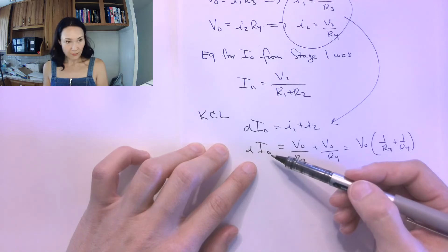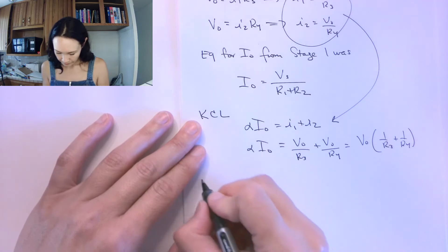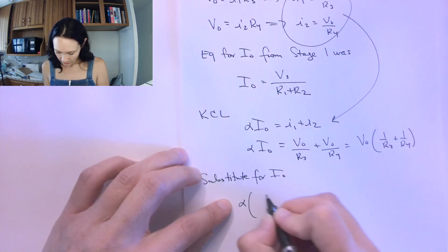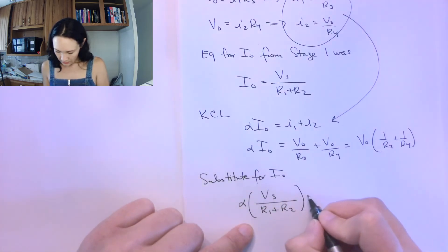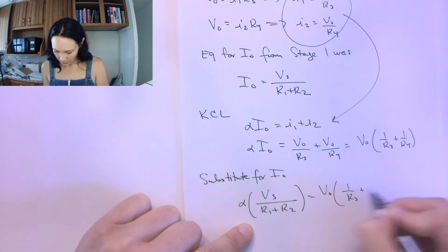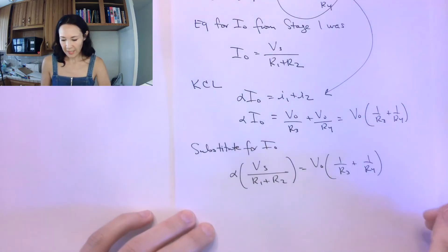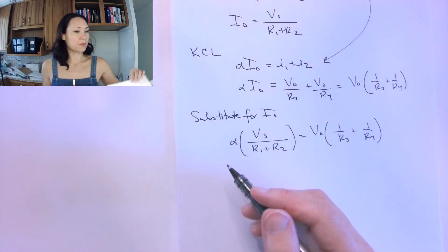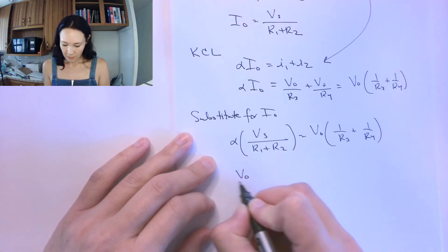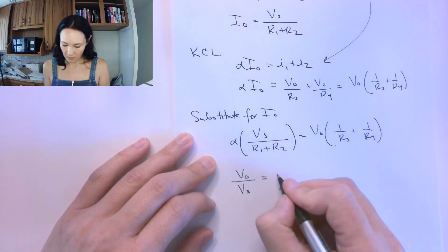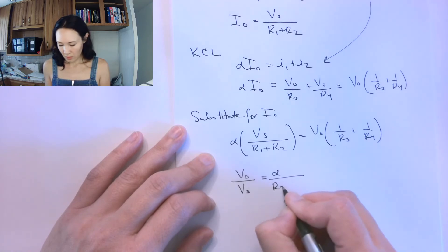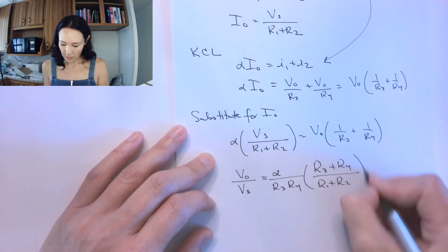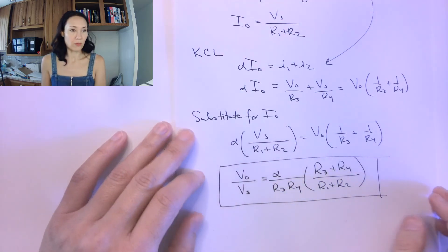That's equal to alpha times I0. Now, in place of I0, I can put this equation that I have from stage one. Substitute for I0: this gives me alpha times Vs over R1 plus R2 equals V0 times one over R3 plus one over R4. Now I'm closer to getting my expression for V0 over Vs, which is the first thing I was asked for. After doing a little bit of algebra, I can bring my V0 over Vs over here and all the other terms on the other side gives me alpha over one over R3 plus one over R4 times R1 plus R2. So here's my expression for V0 over Vs.